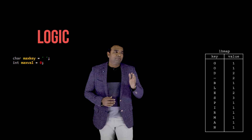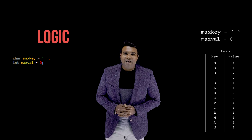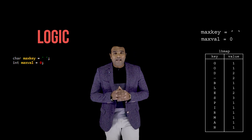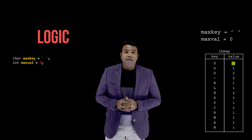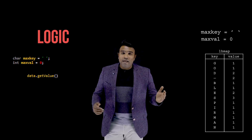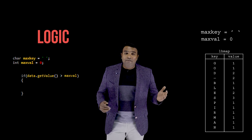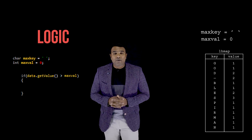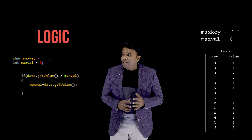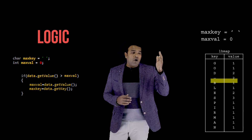The logic begins by creating two variables: one called maxKey and the other called maxVal. I initialize maxKey to a blank character and maxVal to zero. To get the solution, I need to get the value from the map using data.getValue(), then check if that value is greater than maxVal. If so, I update maxVal with that value and place the corresponding key into maxKey.